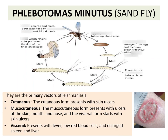They are the primary vectors of Leishmaniasis. It causes cutaneous Leishmaniasis — the presence of skin ulcers, as you see in the picture. Then there is mucocutaneous Leishmaniasis, which presents with ulcers of the skin, mouth, and nose. The third is the visceral form, which starts with a skin ulcer and presents with fever, low RBC, and enlarged spleen and liver. So there are three types of Leishmaniasis due to Phlebotomus minutus: cutaneous, mucocutaneous, and visceral.